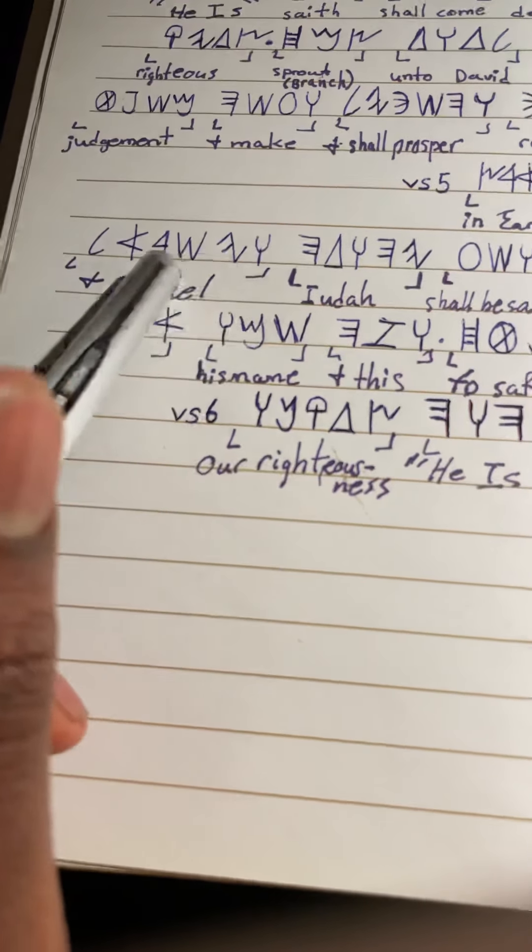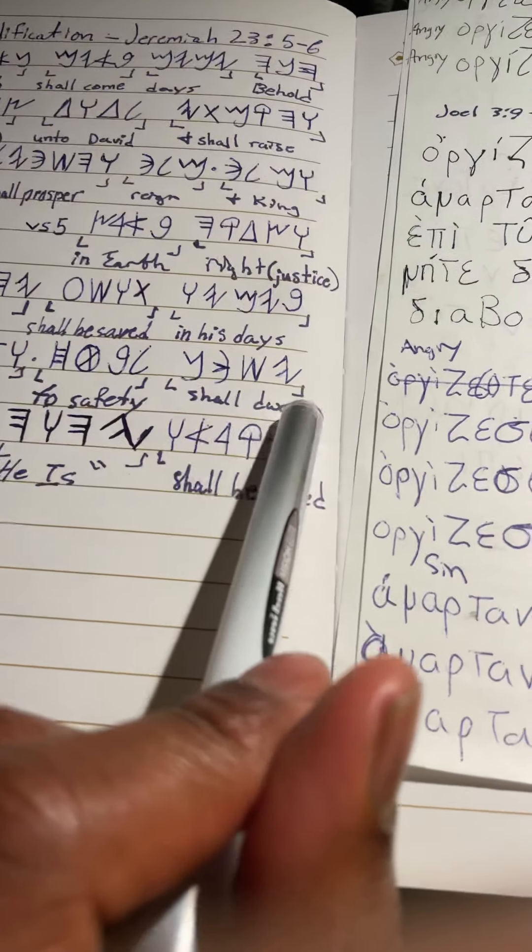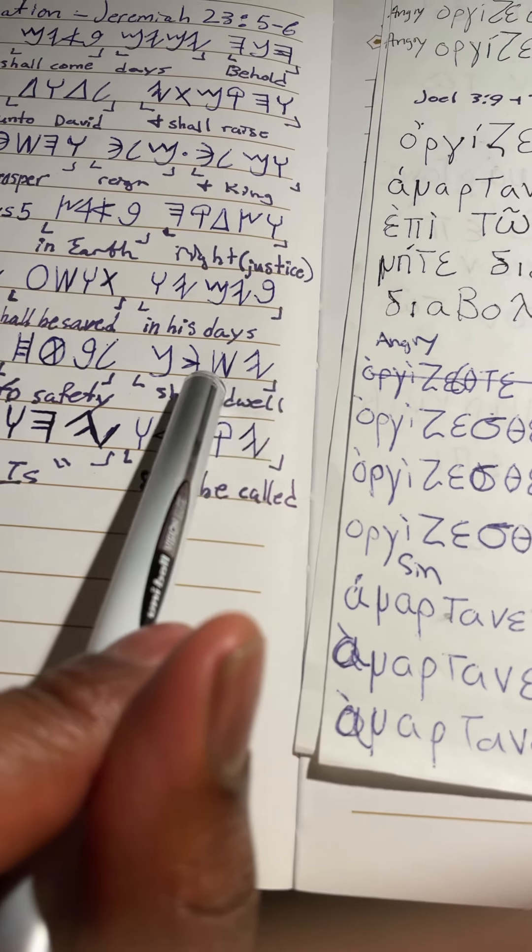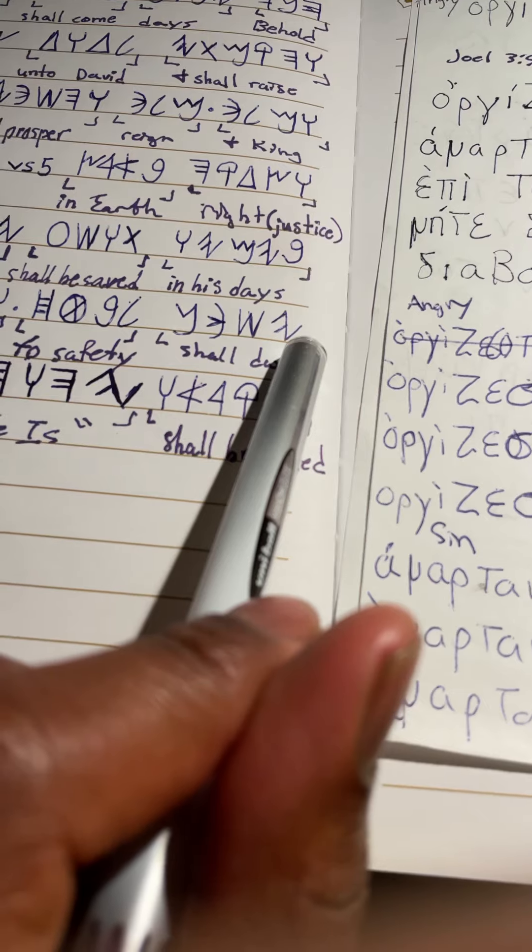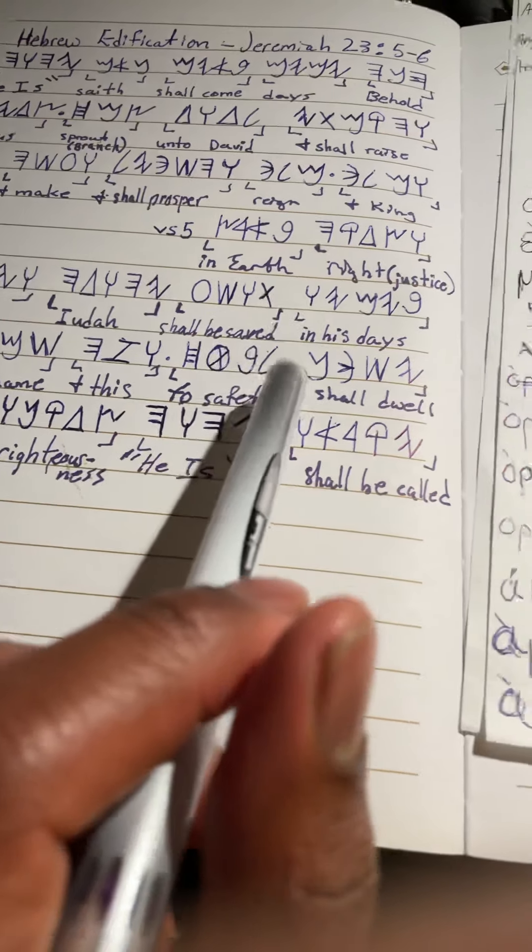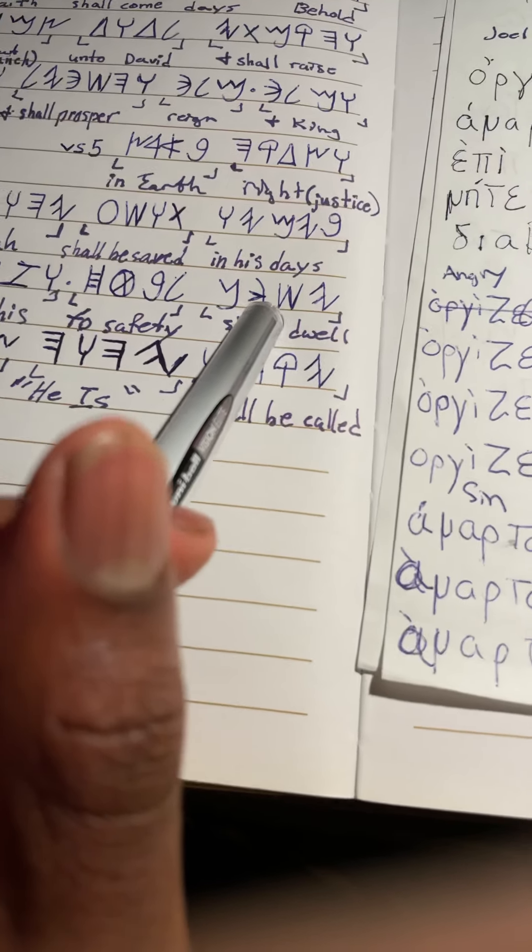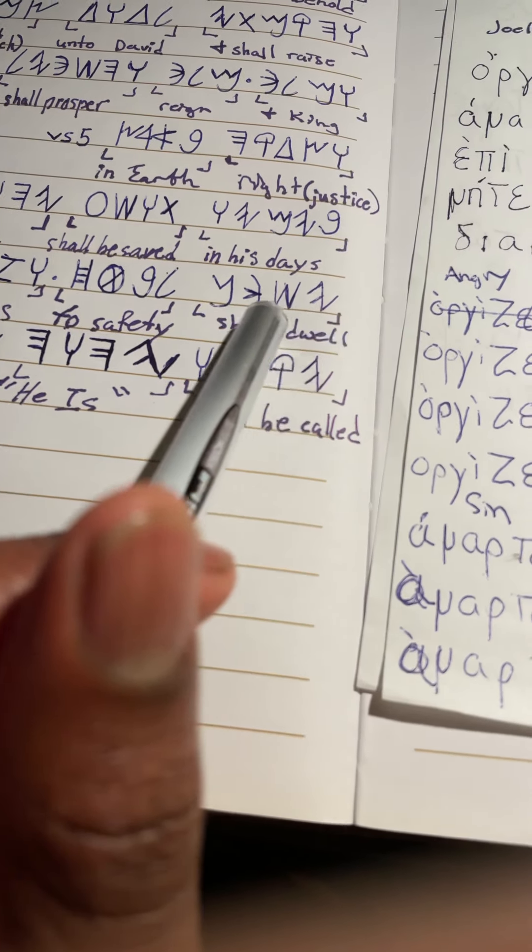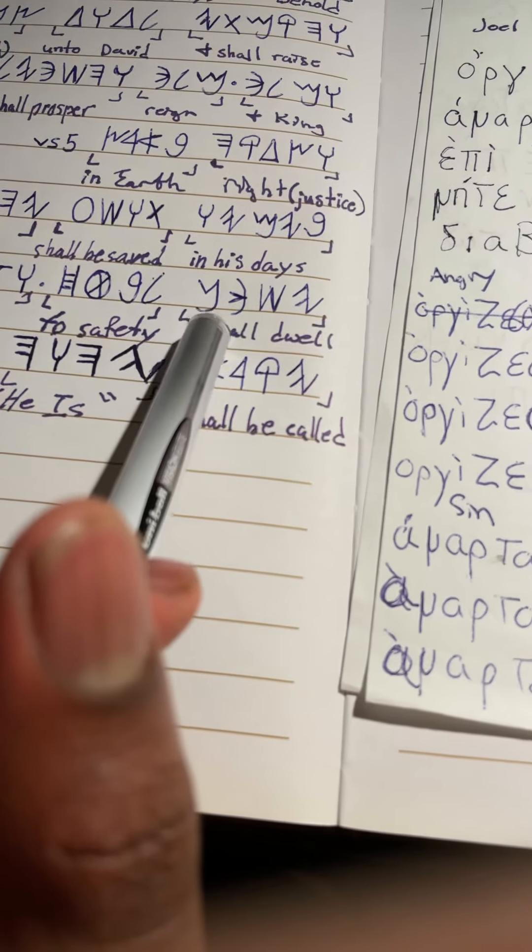And Israel, yah shakan. Yah in the front is a future tense, so when you see yah in the front or thaw in the front, both of those signify future tense depending on the word, of course. So it says yah shakan, shall dwell. Shakan meaning dwell.